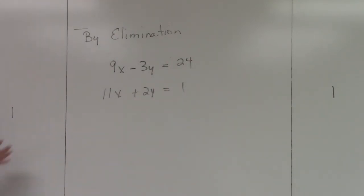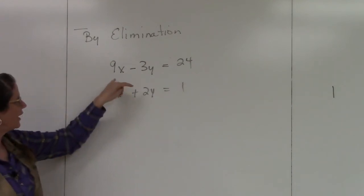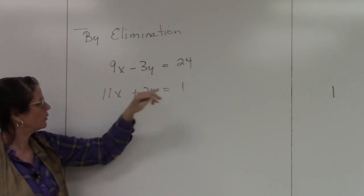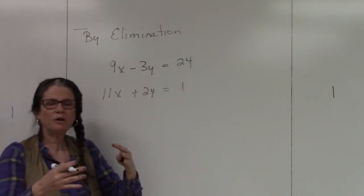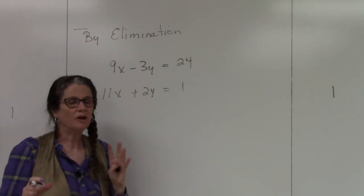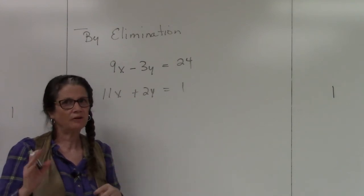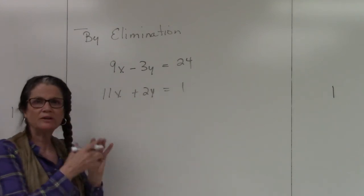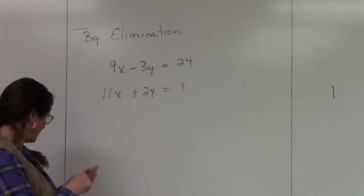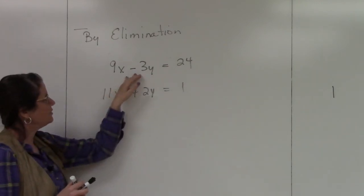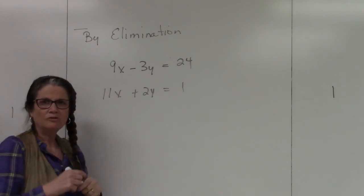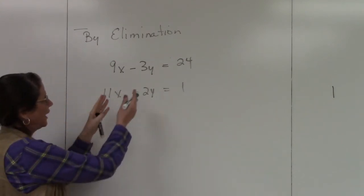Okay, so here's a new equation. This is still a system of equations. I have 9x minus 3y equals 24 and I have 11x plus 2y equals 1. Well, the thing that I want you to look for is a positive and a negative. So always look for that first. It does not matter which one you eliminate. You can eliminate either x or y, doesn't matter. Just pick the one that's easiest to eliminate. Well in this case, I have a negative 3y and a positive 2y, so since these are already negative and positive, or opposite signs, I'm going to use those two values to eliminate.